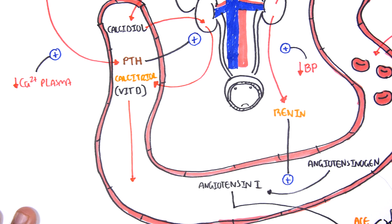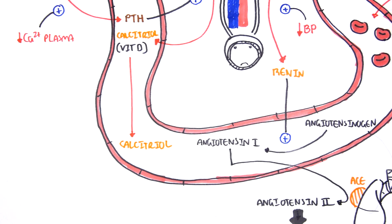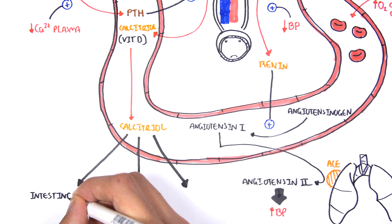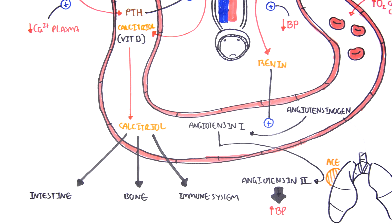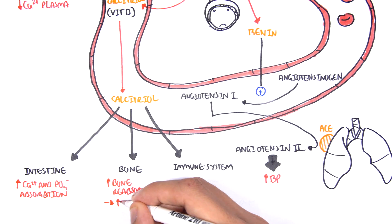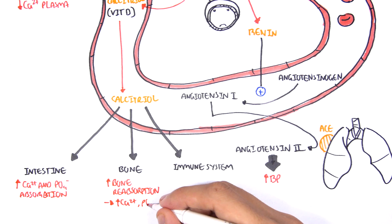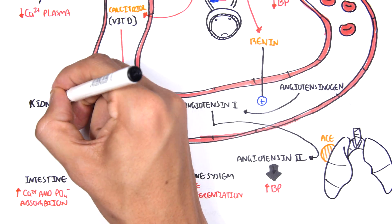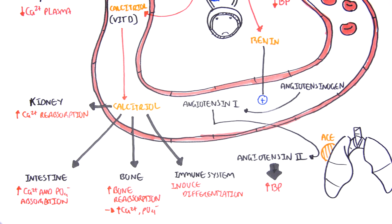Calcitriol is the active form of vitamin D and has many effects in the body. It targets the intestine, the bone, as well as the immune system. In the intestine, calcitriol will increase the absorption of calcium and phosphate. In the bone, it will increase bone resorption, therefore increasing calcium and phosphate levels. Calcitriol also affects the immune system and induces immune cell differentiation. Additionally, calcitriol affects the kidneys itself by increasing the reabsorption of calcium from the nephrons. The main goal of calcitriol is to increase calcium levels in the blood, supported by parathyroid hormone.